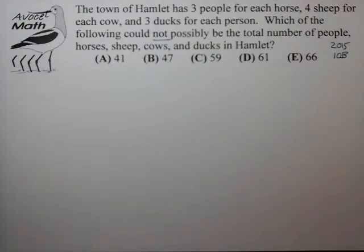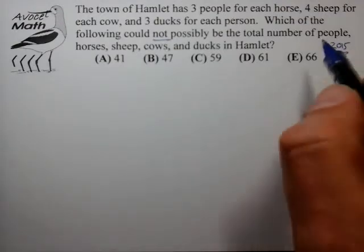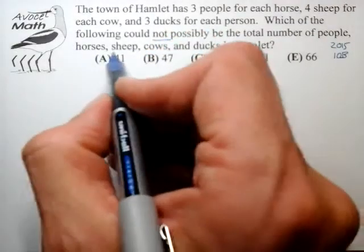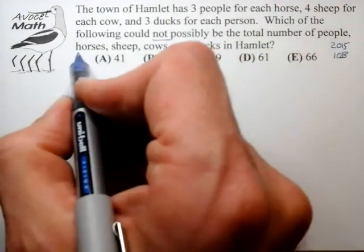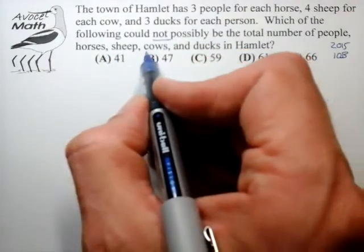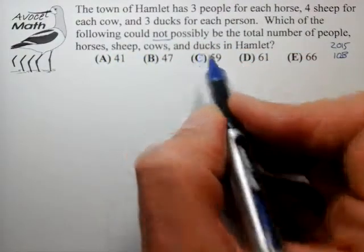So in this case we want to try to unpack this problem. Now one thing that's kind of nice about most AMC problems, in fact all as far as I'm aware, is that they usually involve categories that are pretty easy to represent with symbols. So in this case we could use P to represent the number of people, H for horses, S for sheep, C for cows, D for ducks.